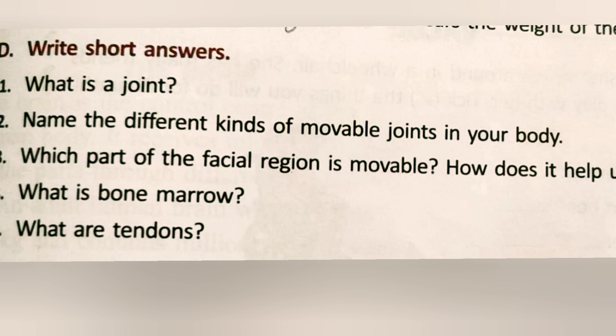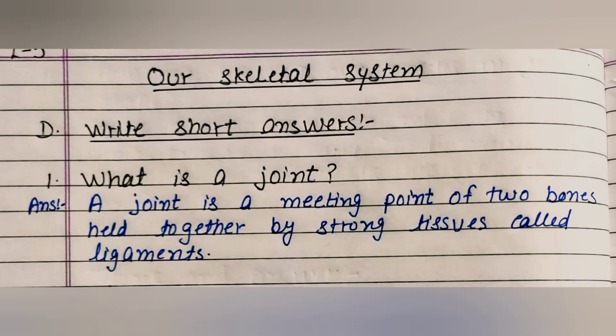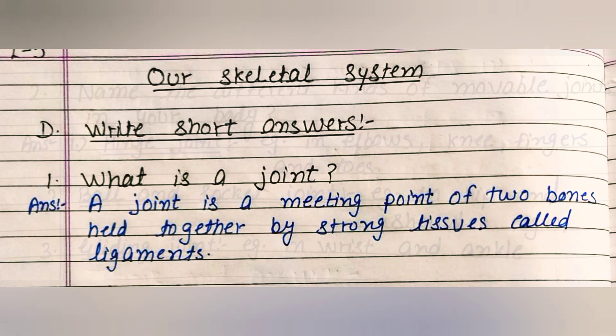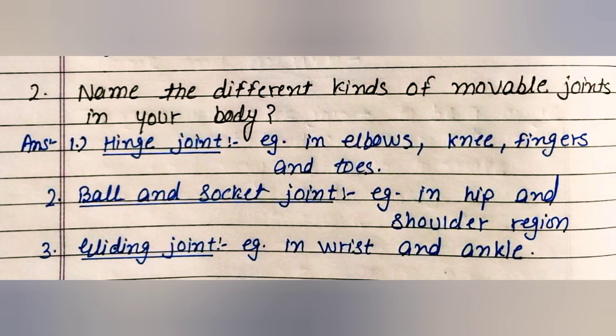Part D: Write short answers. Question one: What is a joint? A joint is a meeting point of two bones held together by strong tissues called ligaments. Question two: Name the different kinds of movable joints. First, hinge joint — found in elbows, knee, fingers and toes. Second, ball and socket joint — the most movable joint, found at hip and shoulders. Third, gliding joint — found at wrist and ankle.